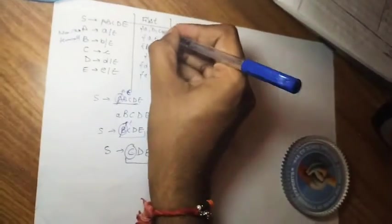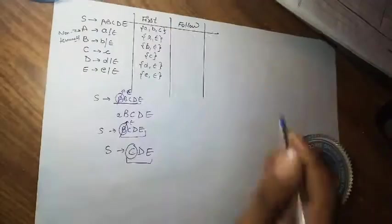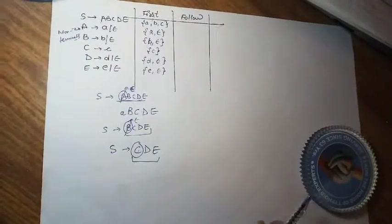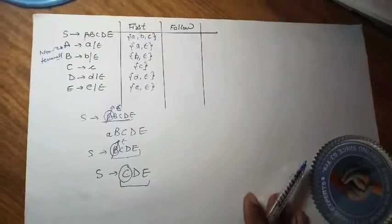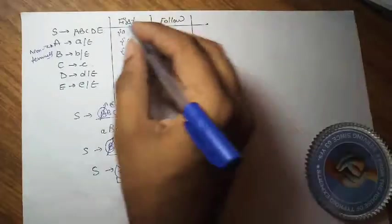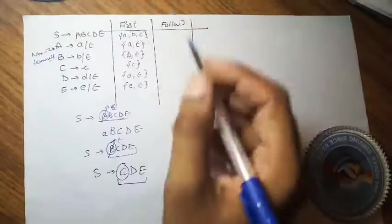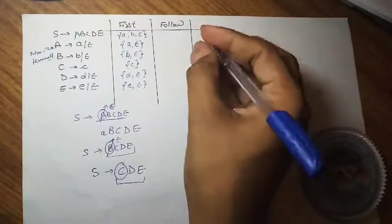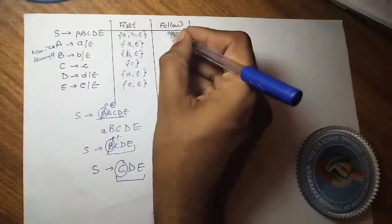Now we have to find the FOLLOW for all non-terminals: start symbol S, A, B, C, D, and E. There is a rule that for the start symbol, FOLLOW always contains the dollar sign ($).